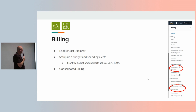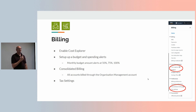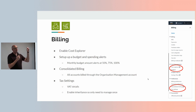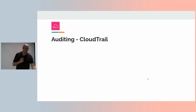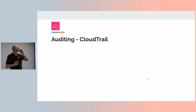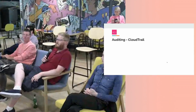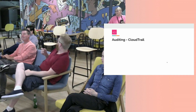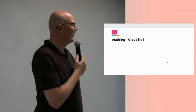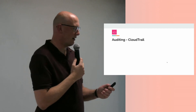Consolidated billing means if you set up an organization, you bill through one account — rather than getting 60 invoices for 60 accounts, you get one. Tax settings: if you're a business, enter your VAT details and enable inheritance so it propagates through the organization rather than entering it for every single account. Worth noting that billing is eventually consistent — you won't get an alert the instant you hit 50%, it will probably be the day after. So you might get an email saying you've suddenly spent $5,000, but at least you know then rather than at the end of the month when it might be $50,000.